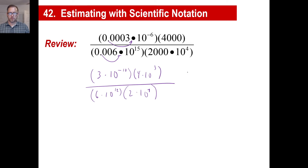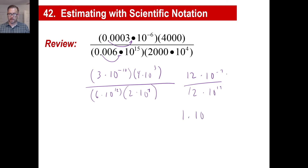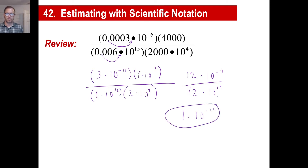3 times 4 is 12. That'll be 10 to the negative 10 plus 3, which is negative 7. Then 12 here, 6 times 2. In other words, 10 to the 19th. 12 divided by 12 is 1. Negative 7 minus 19 is negative 26, and there is your answer. We did that with no calculator at all.